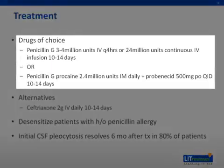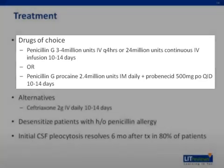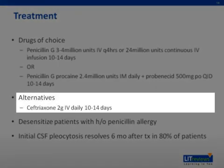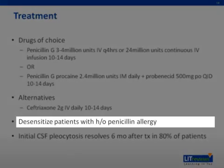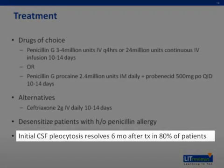The drugs of choice for treatment of neurosyphilis include penicillin G and penicillin G procaine. Penicillin G is administered intravenously over a period of 10 to 14 days, while penicillin G procaine is administered intramuscularly along with probenecid over the same period of time. Alternative antibiotics include ceftriaxone. In patients with a history of penicillin allergy, they should be skin-tested and desensitized. The initial CSF pleocytosis will resolve within six months after penicillin therapy in 80% of patients.